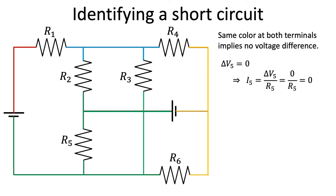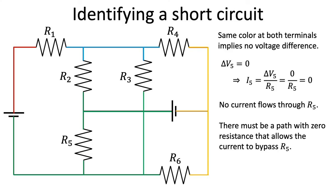According to Ohm's law, current is proportional to the voltage difference, so the same color implies that delta V across R5 is zero, which in turn implies no current flow through R5. So there must be a path with zero resistance that's allowing the current to bypass the resistor.